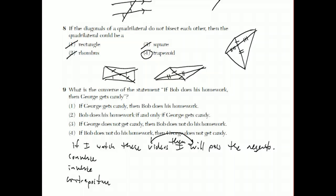So the converse is the one where you switch the if and then around. So instead of saying, if Bob does his homework, then George gets candy, we would say, if George gets candy, then Bob does his homework. That is the converse, choice one. Just to look at, like choice three, if George does not get candy, then Bob does not do his homework. That one's the contrapositive. And choice four, that one's going to be the inverse.